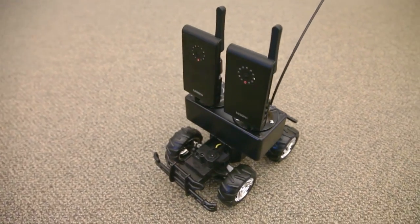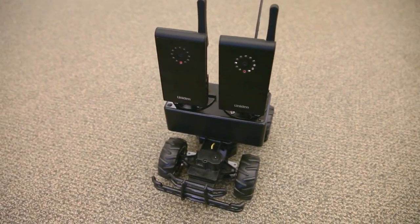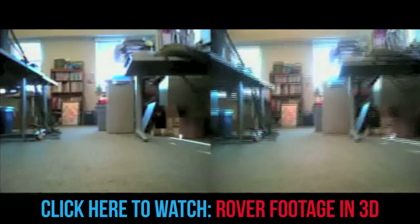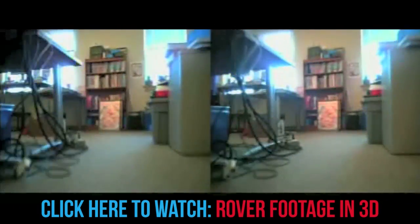For stereoscopic 3D view, set both cameras facing forward at the same angle and elevation. If you know how to view stereograms, you can set the receiver to quad mode and view the video feeds as either parallel or cross-eyed stereo view for full 3D roving experience.